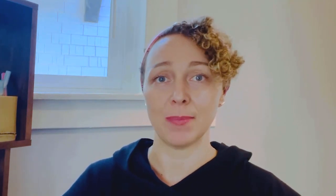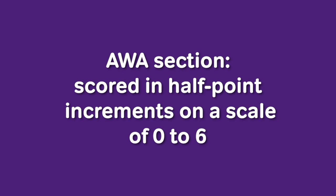When you dig into that score report and you're analyzing your GRE test results, it's really important that you have a solid understanding of what those results even mean. Both the verbal and quantitative sections are scored in one-point increments on a 130 to 170 scale. For the AWA — otherwise known as the analytical writing section — scores are in half-point increments on a scale of zero to six.